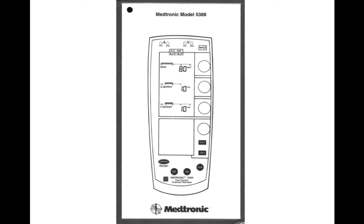It has a very simple interface. There's the rate knob right here, and that's adjusting your rate. When you turn on the device, it defaults at 80, 10, and 10 — as far as your rate and your milliamps for atrial output as well as ventricular output.